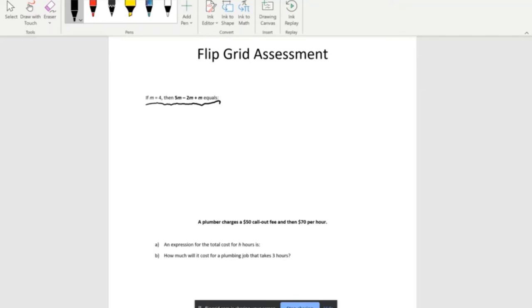First, let's write out our expression: 5m minus 2m plus m. Now we have to expand.